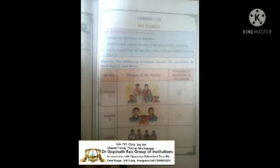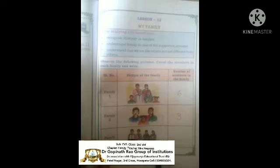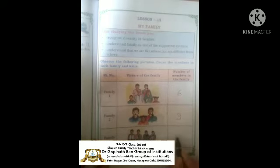And next, family number three: father, mother, uncle, aunt, grandfather, grandmother, younger sister, elder sister, another sister, brother, younger brother. These are the members of the family — this is called a large family, joint family, or big family. Count the members: 1, 2, 3, 4, 5, 6, 7, 8, 9, 10, 11. There are 11 members total.